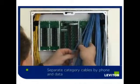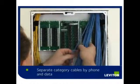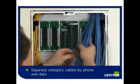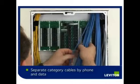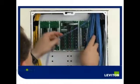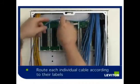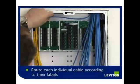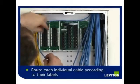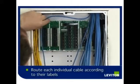Separate your Category 5E cables by phone and data. In this case, because we have 24 cables, we are going to separate them into groups of 12. This separation allows us to route each cable individually, making sure we know which cable we are dealing with by its label.